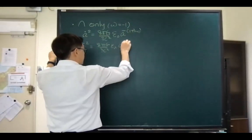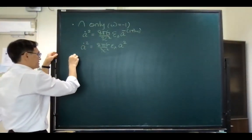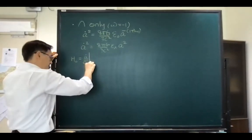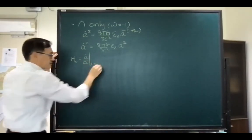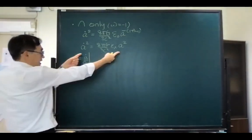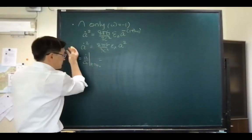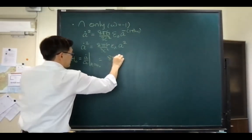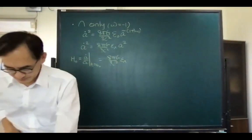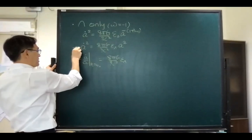The definition of the Hubble constant is a-dot over a, evaluated today. So (8πG / 3c²) × ε_lambda equals H₀². This means the equation becomes quite simple: a-dot equals H₀ × a.